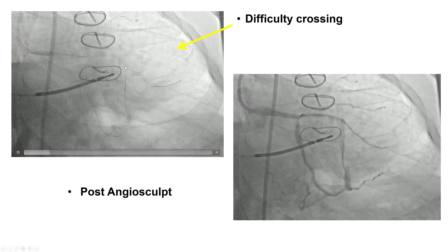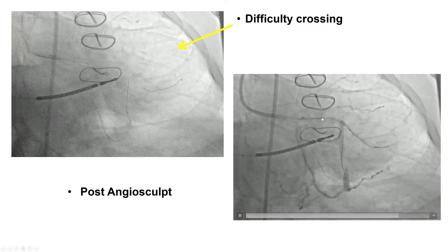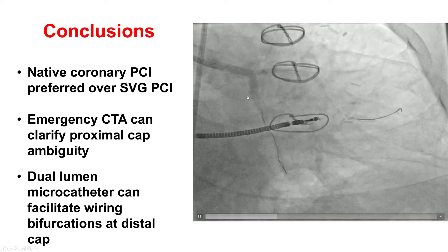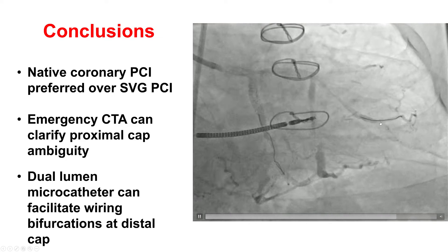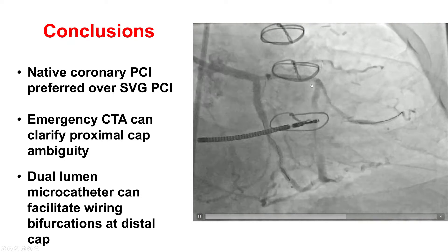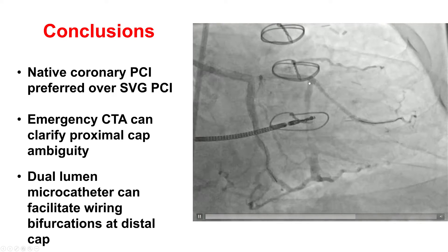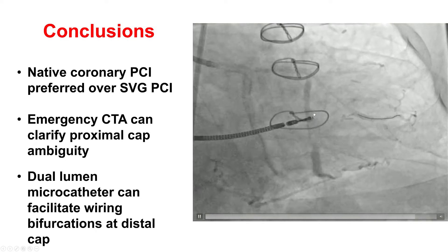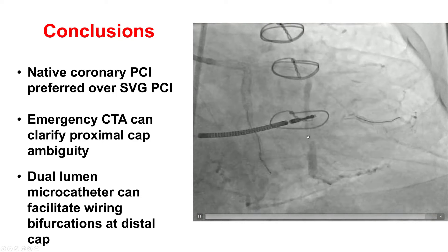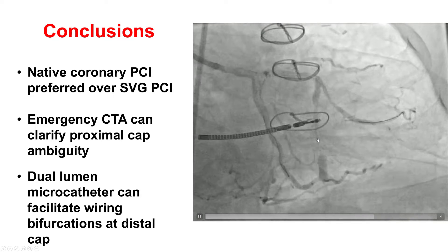After that, we pre-dilated, used a high-pressure AngioSculpt, and were able to deliver a long drug-eluting stent, restoring TIMI-3 flow into the RAMUS branch. There remained some flow in the SVG; however, we did not want to do anything to the graft since it is likely to occlude in the ensuing weeks or months given the high-grade lesion that it had.